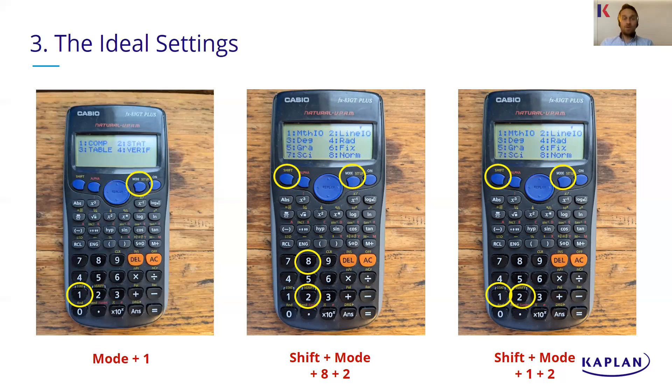If you do want it to show fractions, I know some people still like that. If you do that last setting, shift plus mode plus one, and if you just press one at the end instead of two, that will keep it as a fraction in your answers if you prefer that. So hopefully that gets you to the perfect setting on your calculator. That's how I'd set mine up.